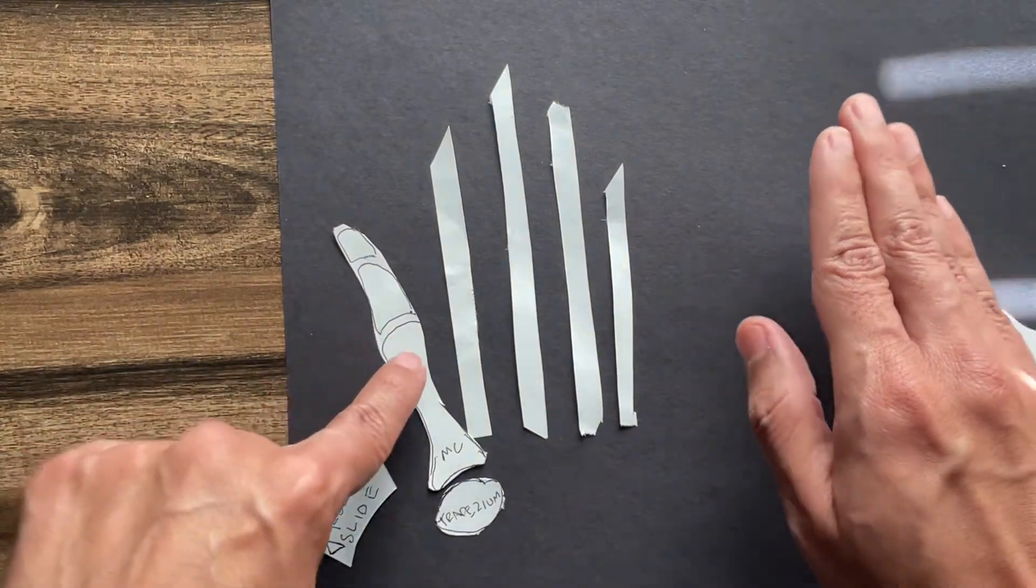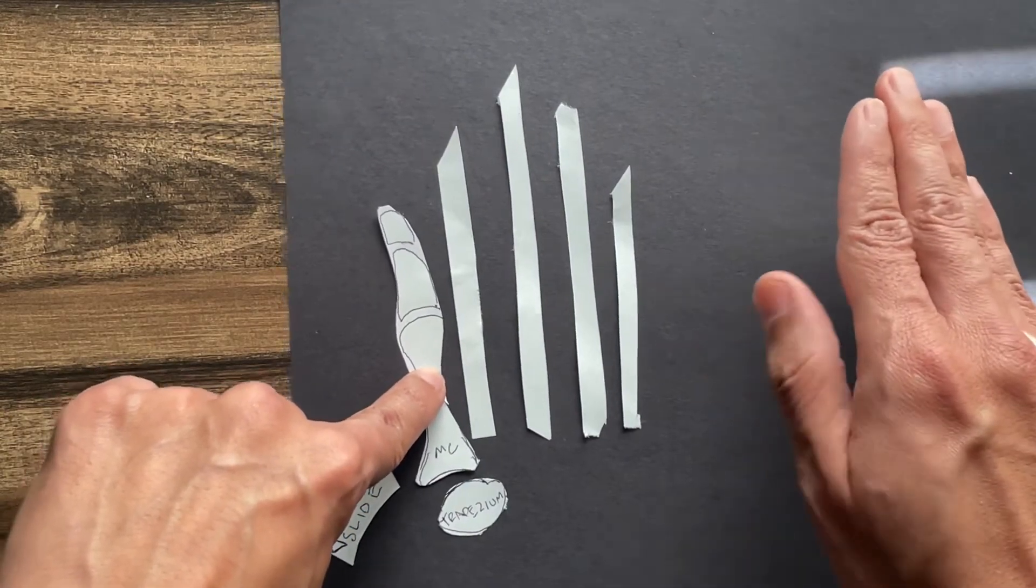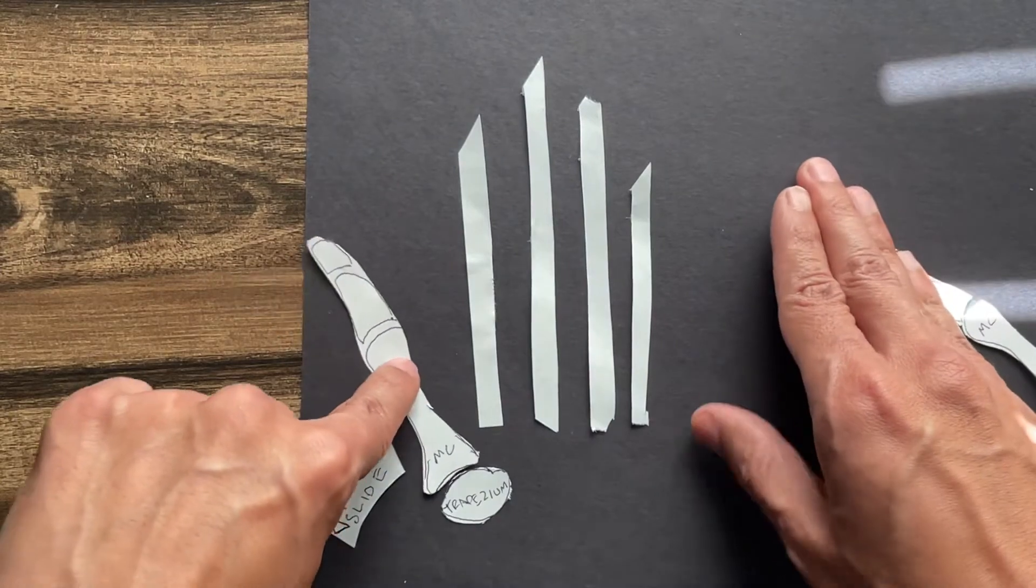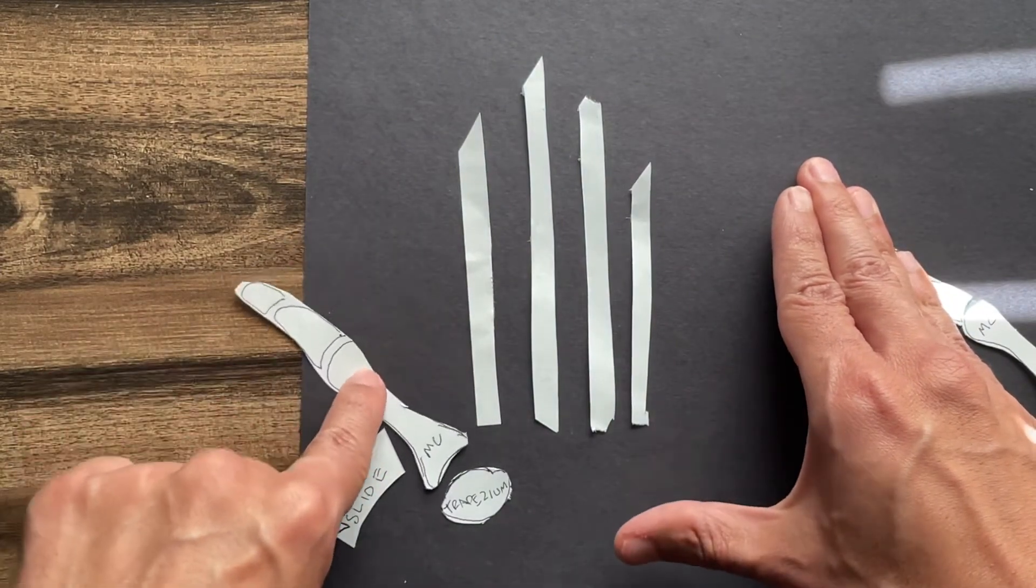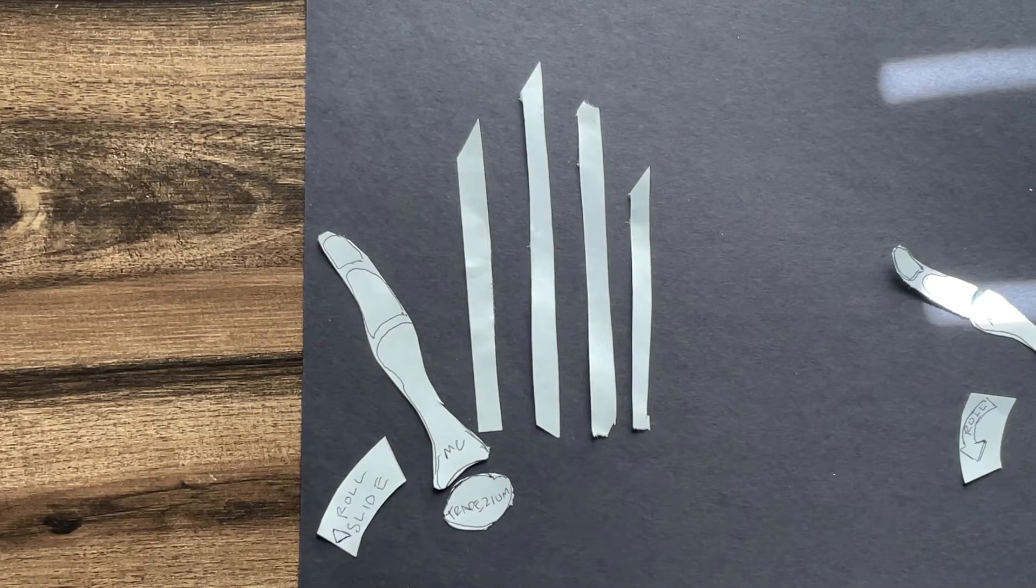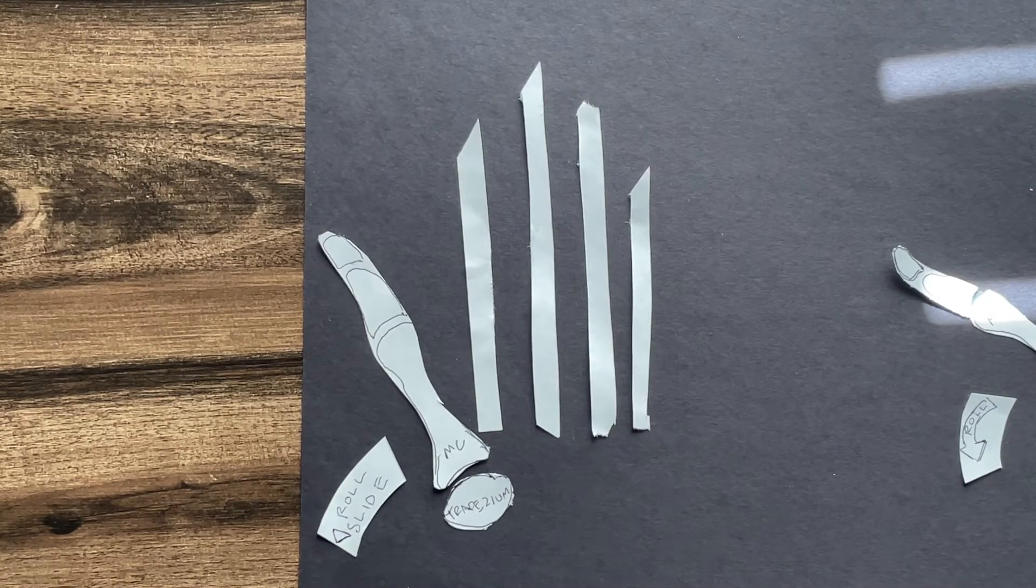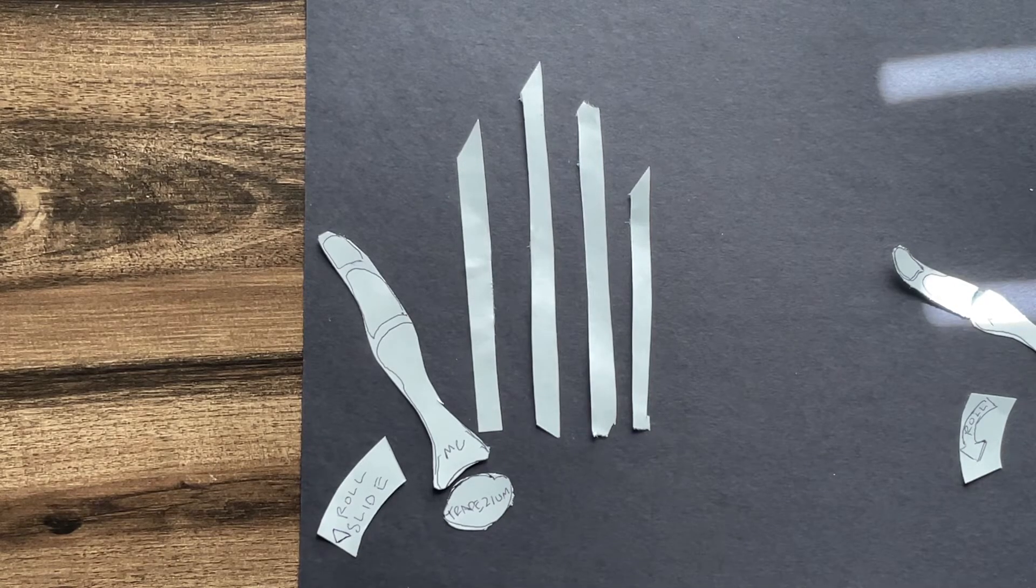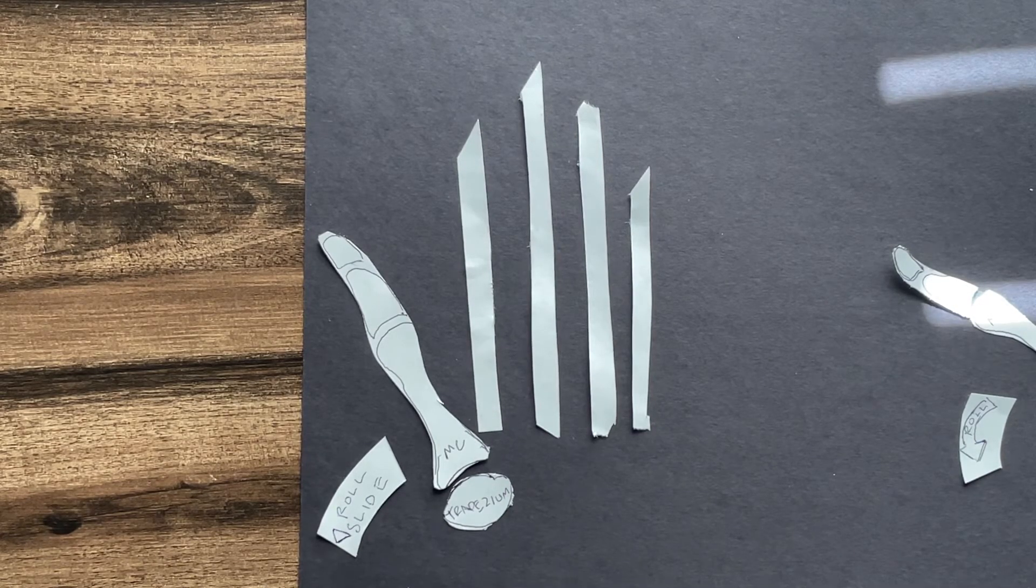That is going to be as flexion and extension. Flexion, extension. Because of the shape, the saddle joint, hopefully this makes the concave convexity and the rolling sliding directions a little bit clearer.